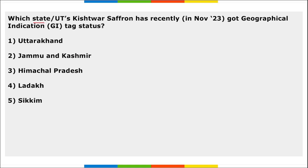Next: which state or UT's Kishtwar Saffron recently got the GI tag status? It is of Jammu and Kashmir. This is the fourth product from Jammu and Kashmir that recently got the GI tag.